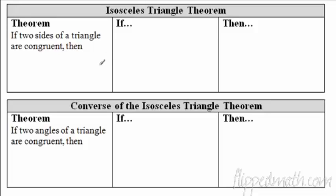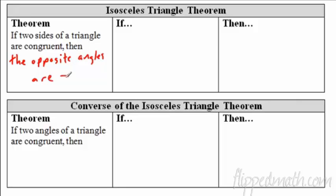Excellent. So we're going to need a theorem for our proofs — it's called the Isosceles Triangle Theorem. If two sides of a triangle are congruent, then the opposite angles are congruent. I'll abbreviate congruent with the congruence symbol — that's perfectly legit.